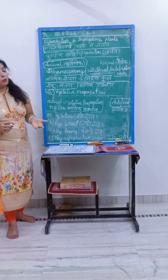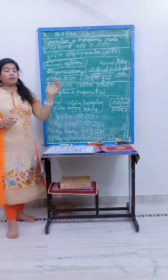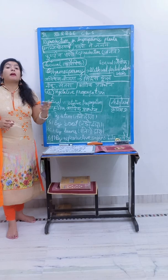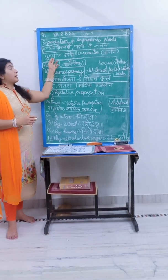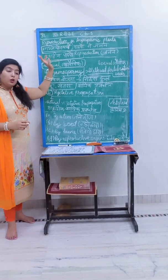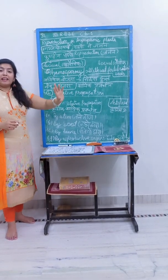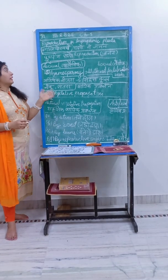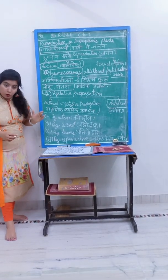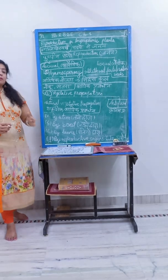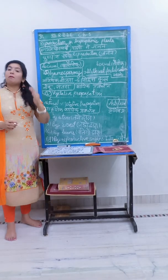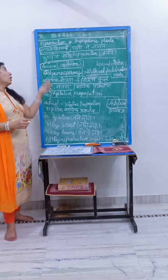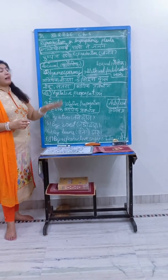In the animal kingdom, bryophytes are considered the amphibians — the bridge between water and land. Similarly in the Plant Kingdom: bryophytes are amphibians, then pteridophytes, then gymnosperm and angiosperm. Both gymnosperm and angiosperm are pushpiya padap — flowering plants. Angiosperm is the true pushpiya padap.